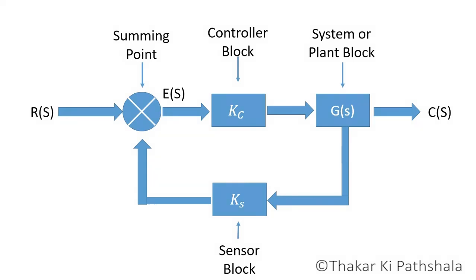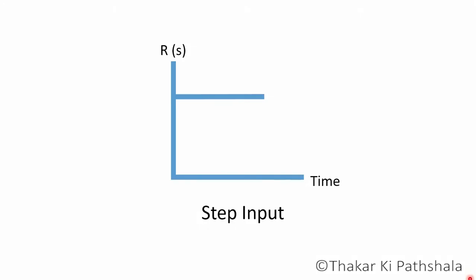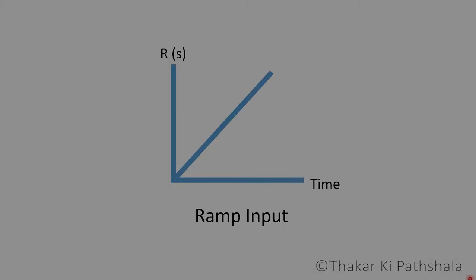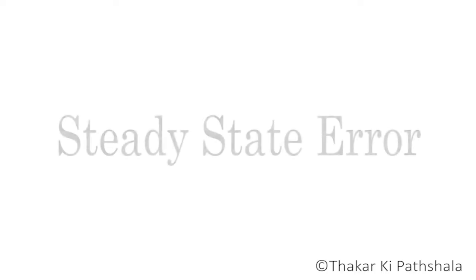The input is often the desired output. In simple words, the input is what we want as output. If the input is a step signal, then we want the output to settle at a certain value. If the input is a ramp signal, then we can expect that the output will increase consistently.